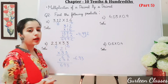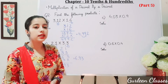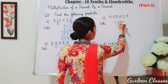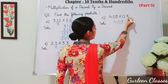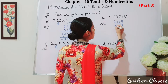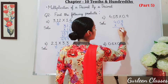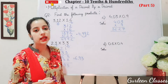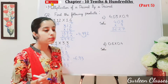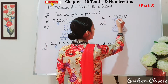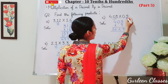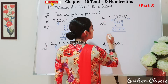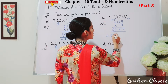So after the decimal point there are 2 digits. Now part c: 4.03 into 0.9. So ignore the decimal points. We have 403 and 0.9, so we will multiply by 9. 9 threes are 27, 9 fours are 36 plus 2 is 38. So the answer is coming 3627. After the decimal point in 4.03 there are 2 digits, and in 0.9 there is 1. So 1 plus 2 is 3 — counting from the right: 1, 2, 3. So the answer is 3.627.